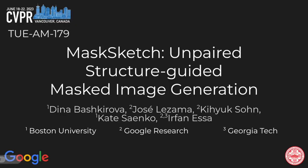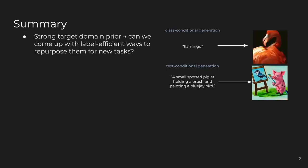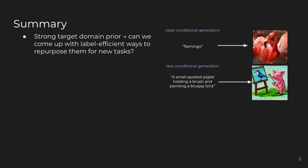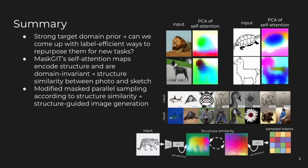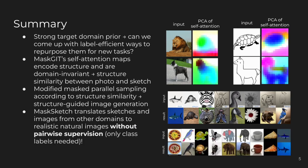We present Masked Sketch for unpaired structure-guided masked image generation. In this paper, we answer the question: how can we use the strong prior of state-of-the-art generative models to perform high-quality image-to-image translation without any additional supervision? Our key observation is that self-attention maps of the state-of-the-art generative transformer Masked encode structure for images of any domain, such as photos and sketches. We use this observation to formulate a structure similarity objective used for modified structure-guided sampling. Our sampling algorithm, Masked Sketch, allows translation of sketches to realistic natural photos. Masked Sketch translates images from arbitrary domains, such as sketches, cartoons, and 3D models, into the natural domain without any pairwise supervision and only requires a class label.